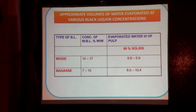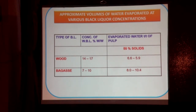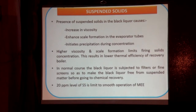For wheat black liquor having WL of 14 to 17%, you have to evaporate 6.5 to 5.9 cubic meters of water per ton of pulp to generate 50% concentration black liquor. In case of bagasse, which has almost 10 to 11% WL, you have to evaporate 8 to 10.5 cubic meters of water for every ton of pulp — making it aware of the importance of weak liquor solids.